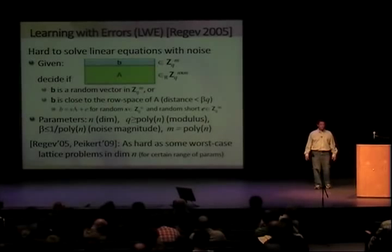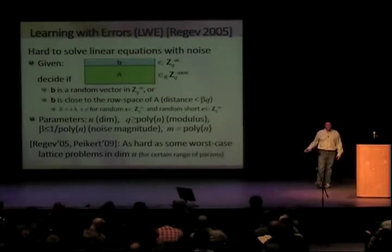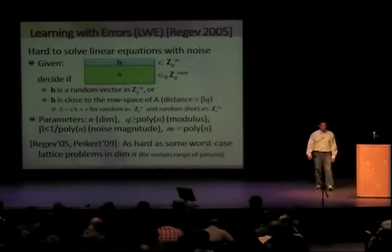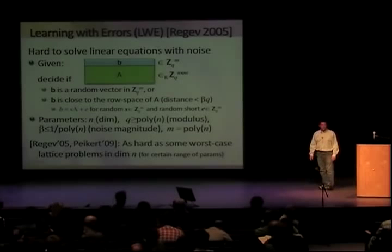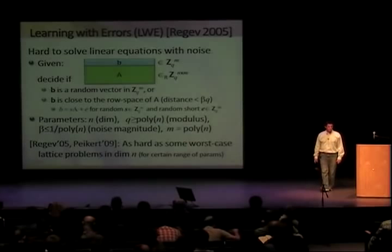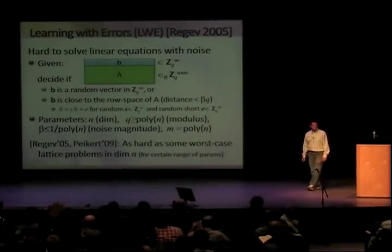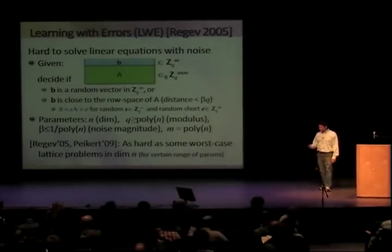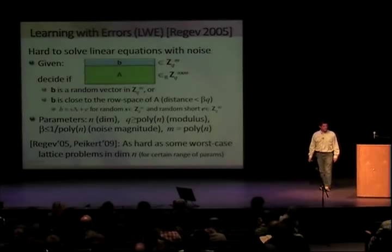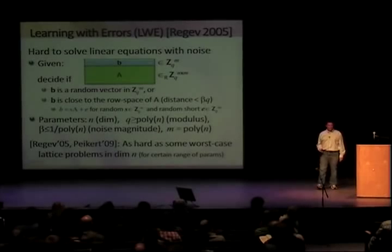Regev showed, when introducing this, a quantum reduction, and then Peikert later showed a classical reduction, showing that for some range of parameters, you can prove this problem is as hard as solving worst-case lattice problems in dimension N. So we have reasons to believe it's really hard. We're going to go on the premise that this is a hard problem and see what we can do with it.